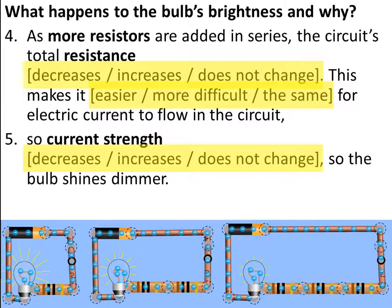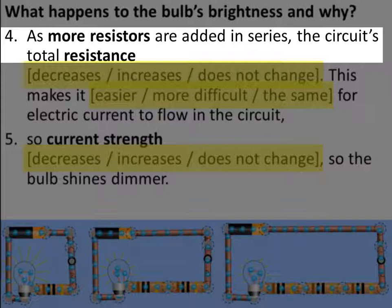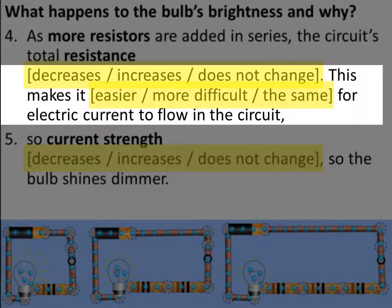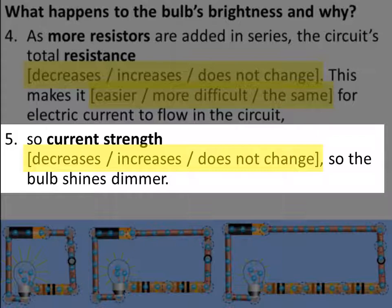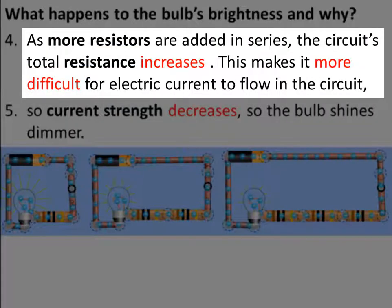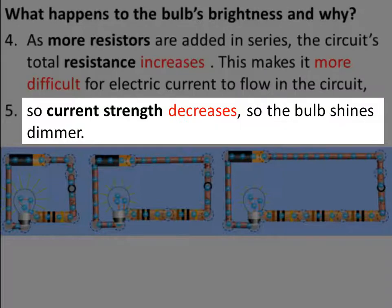So how do we complete these sentences? As more resistors are added in series, the circuit's total resistance increases. This makes it more difficult for electric current to flow in the circuit, so current strength decreases and the bulb shines dimmer. Complete the gaps before you continue. As we put more resistors in series, the circuit's total resistance increases, making it more difficult for electric current to flow, so the electric current strength decreases and the bulb shines dimmer.